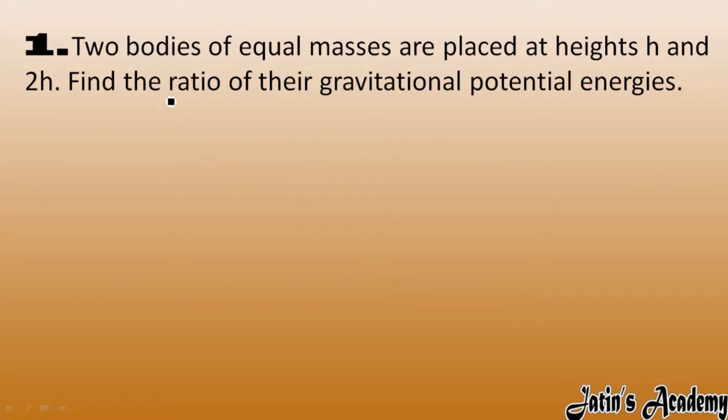We have two bodies of equal masses placed at heights h and 2h. Find the ratio of their gravitational potential energy. Two bodies having equal mass - one body has mass m, another body also has mass m.